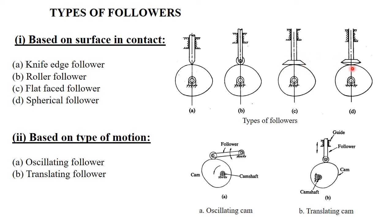The fourth category is the spherical face follower. Because of its spherical shape, it gives a point contact and smoother motion. It is similar to the flat face follower but has a spherical face at the bottom providing point contact. Note that roller followers also have line contact with the cam profile. Based on the surface in contact, followers are classified into four types: knife edge, roller, flat face, and spherical follower.